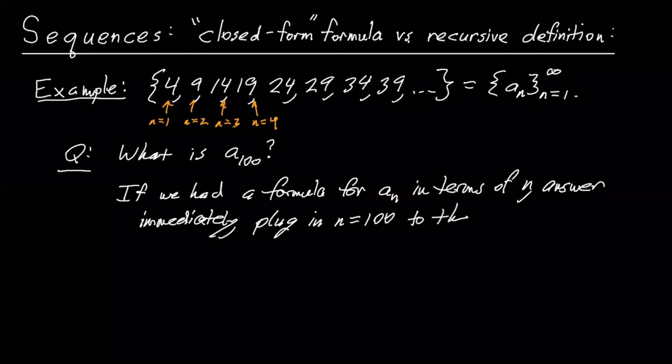So, in simple examples we looked at, for example, just as a side example, when we had the squares, 1, 4, 9, 16, and so on, then we know a sub n is n squared.